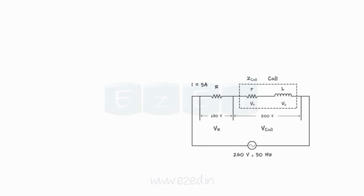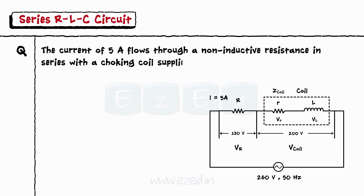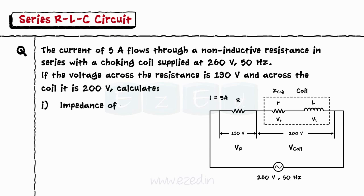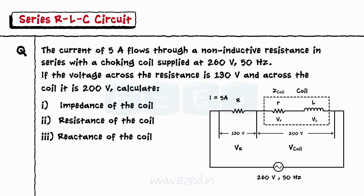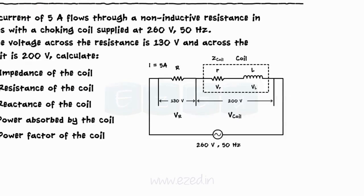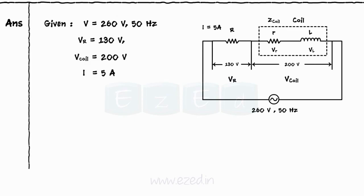Let's solve some examples. A current of 5 amperes flows through a non-inductive resistance in series with a choking coil supplied at 260 volts, 50 Hz. The voltage across the resistance is 130 volts and across the coil it is 200 volts. We need to calculate the impedance, resistance, reactance of the coil, power absorbed by the coil, and the power factor of the coil. Given: V equals 260 V, 50 Hz, VR equals 130 V, V across coil equals 200 V, I equals 5 A.